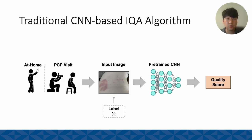Before we dive into our methods — in the traditional convolutional neural network based image quality assessment algorithm, it's pretty straightforward: the input image is fed into a neural network and an output score is predicted. Usually in medical imaging, a pre-trained model is used, which has been trained on thousands of natural images, because the number of datasets in medical imaging is very small.